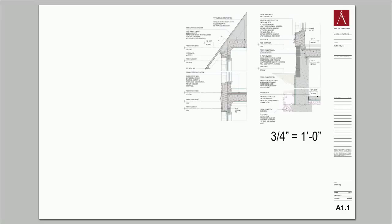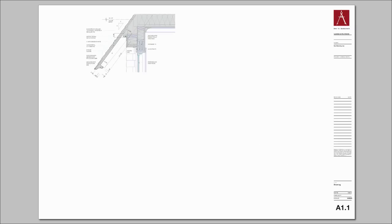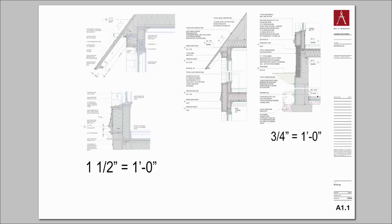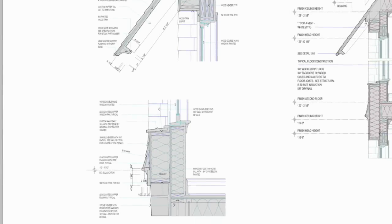Finally, these details are shown at a larger one and a half inch scale so that even more detail can be drawn. It's clear that doubling the size of the 3/4 inch wall section allows the architect to show more detail and more notes.